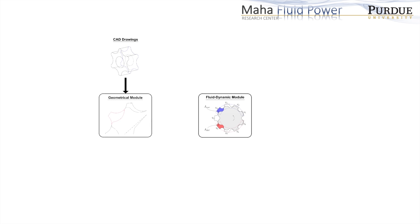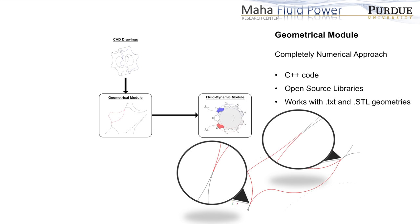The geometrical information required by the different submodules are provided by a custom-made geometrical model based on a numerical approach, which can take, as inputs, CAD data from the machines.